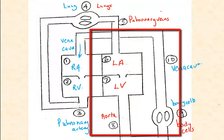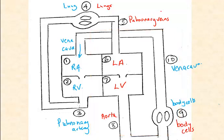And systemic loop, which leads from the left side of the heart to the body cells and then back to the right side of the heart. Hence, we have a double loop circulatory system.